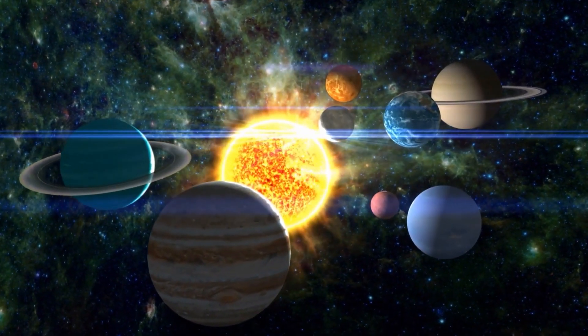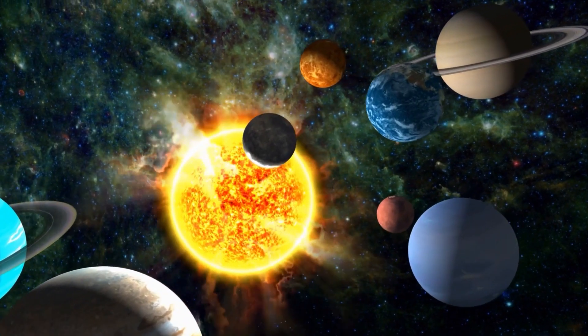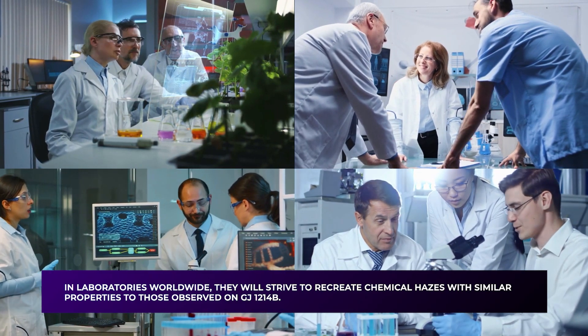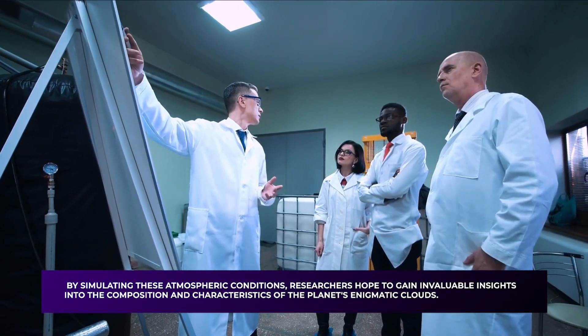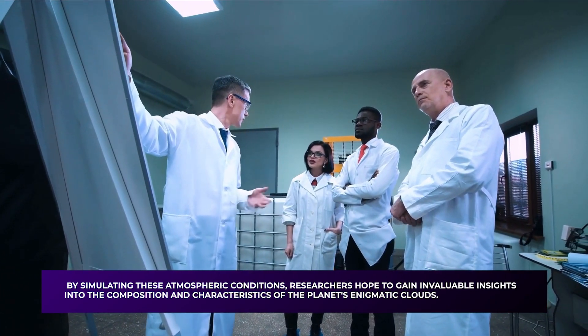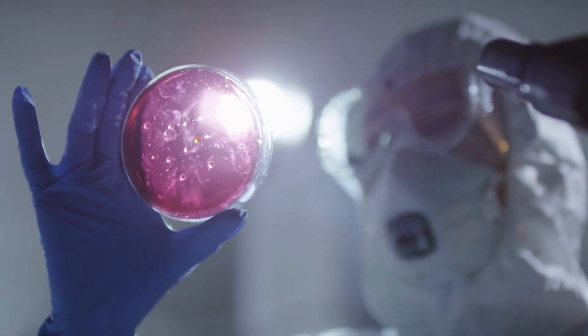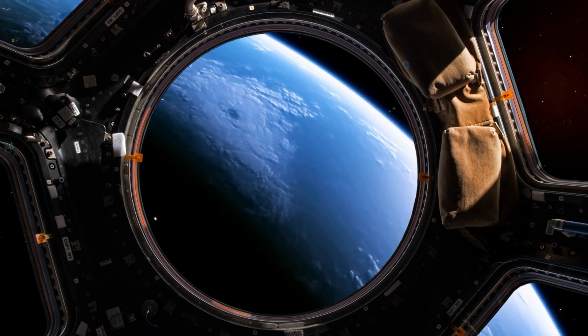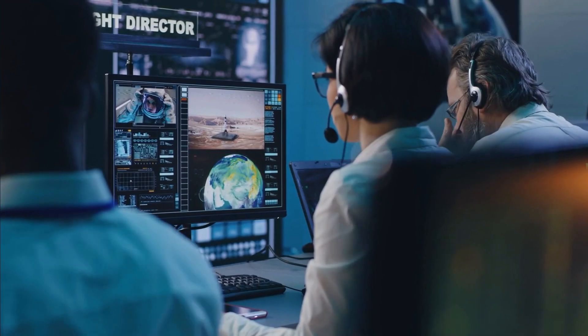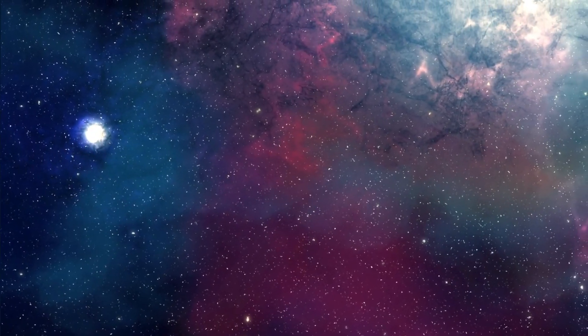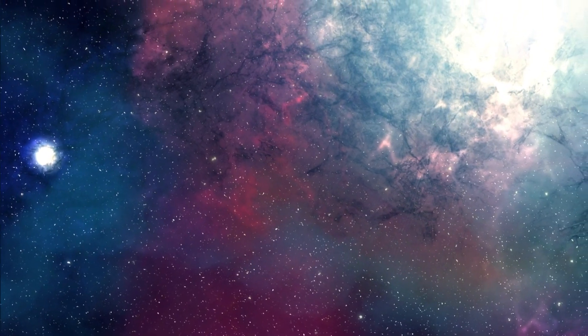Driven by insatiable curiosity, scientists are embarking on a groundbreaking endeavor. In laboratories worldwide, they will strive to recreate chemical hazes with similar properties to those observed on GJ-1214b. By simulating these atmospheric conditions, researchers hope to gain invaluable insights into the composition and characteristics of the planet's enigmatic clouds. The journey to replicate and understand these enigmatic hazes represents a thrilling scientific quest. With each experiment conducted and data point collected, scientists inch closer to unlocking the secrets of GJ-1214b's atmospheric mysteries. The laboratory becomes a crucible of discovery, providing glimpses into the complex mechanisms that shape the planetary atmospheres of distant worlds. As the scientific community unites in their pursuit, a new chapter in atmospheric science unfolds.